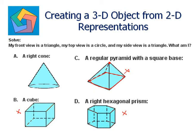Let's look at the right cone. The front view is a triangle — this is a triangle. If you look at the sides also for a cone, it will be a triangle. And looking from the top, the view will be circular. So A, right cone, is the answer.